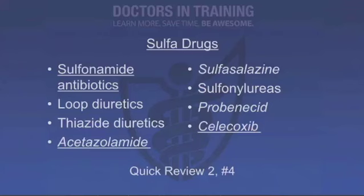What drugs are considered sulfa drugs that should generally be avoided in sulfa-allergic patients? The most obvious category is sulfonamide antibiotics. But loop diuretics — with the exception of ethacrynic acid — thiazide diuretics, and acetazolamide are all considered sulfa drugs. Sulfasalazine (used for inflammatory bowel disease), sulfonylureas (for diabetics), probenecid, and celecoxib (a COX-2 inhibitor) are also sulfa drugs. Being allergic to sulfonamide antibiotics doesn't necessarily mean you're allergic to all of them, but you do have a higher risk.